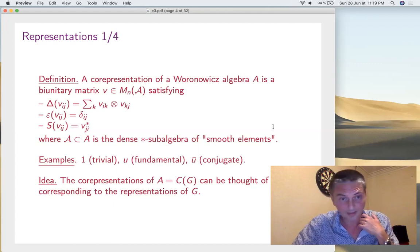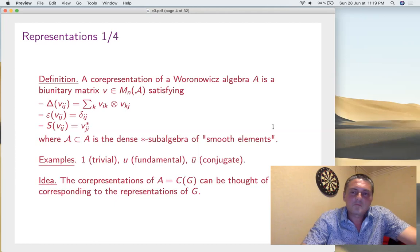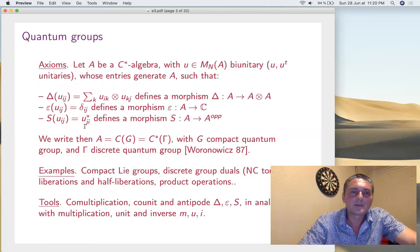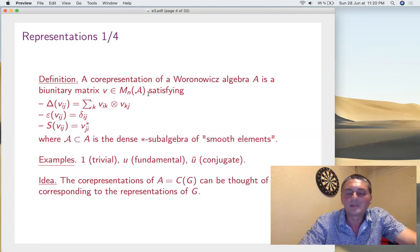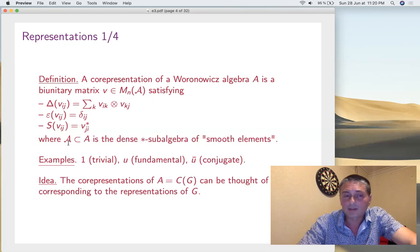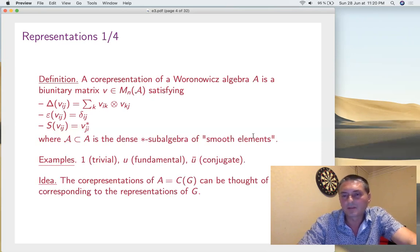Representations. We already know one: the fundamental representation U. These were the conditions — delta, epsilon, S — to be satisfied. Take exactly these conditions and put V instead, an arbitrary matrix. That's going to be our co-representation. We'll assume that the coefficients belong to the algebra of smooth elements. This was actually true for U itself, because the calligraphic A is, by definition, the algebra of coefficients of U generated by the U_{ij}. So that's our definition: we're interested in unitary smooth finite-dimensional representations.